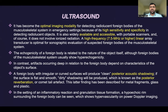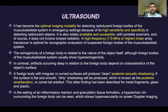Echogenicity of a foreign body is related to the nature of the object itself, although foreign bodies of the musculoskeletal system usually show hyperechogenicity. Artifacts occurring deep in relation to the foreign body depends on the characteristics of the object surface. A foreign body with an irregular or curved surface will produce posterior acoustic shadow, and if the surface is flat and smooth, dirty shadows are produced, which is known as posterior reverberation or comet-tail artifact. The latter finding has been described for metal fragments, glass and plastics.